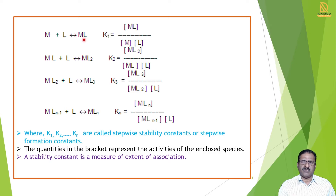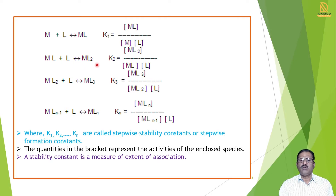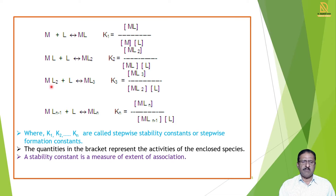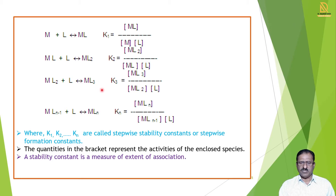Next, ML is the product from the first reaction, and in the second reaction we add a second ligand to get ML₂. The stability constant K₂ = [ML₂] / ([ML][L]). This is the second stability constant. In the third step, we add another ligand to ML₂: ML₂ + L gives ML₃. The formation constant K₃ = [ML₃] / ([ML₂][L]).